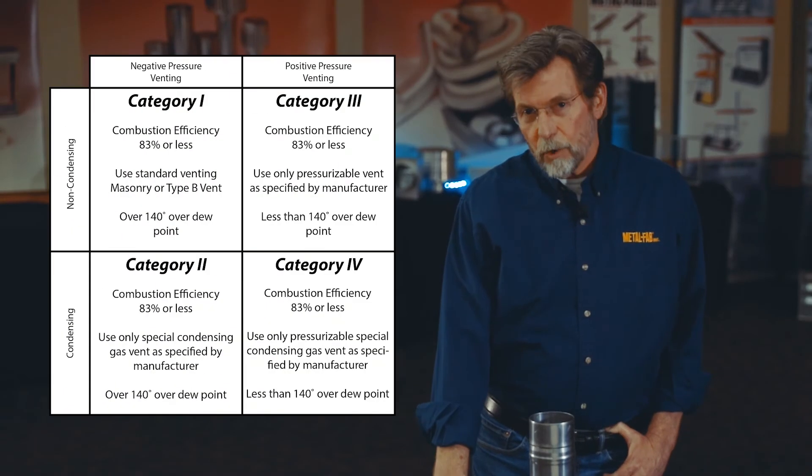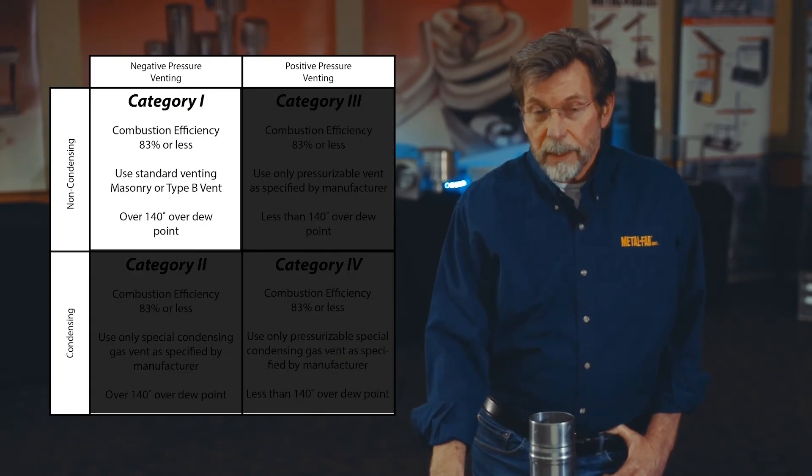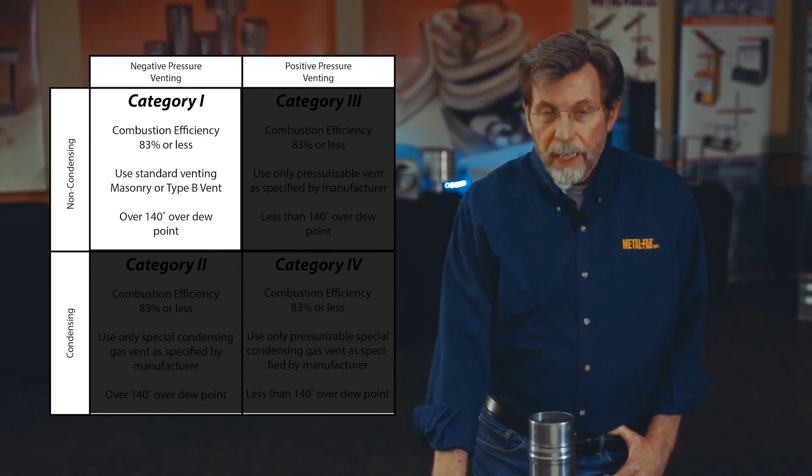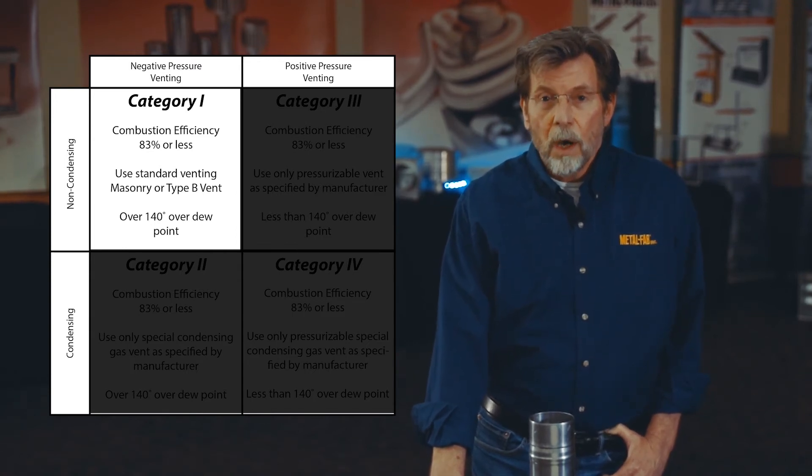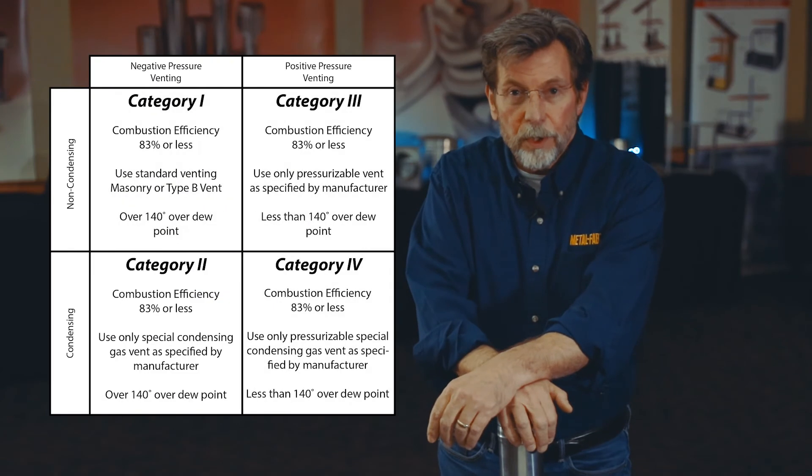On a category one gas fired appliance, the definition is that the products of combustion will be over 140 degrees above dew point, and the pressure inside the vent when that appliance is operating will be slightly negative — or in some cases referred to as zero. Looking at the graphic for a category one appliance, the vent pressure is slightly negative and the products of combustion as they exit the appliance are more than 140 degrees above dew point, so we're not worried about condensation forming inside the vent or products of combustion leaking out.